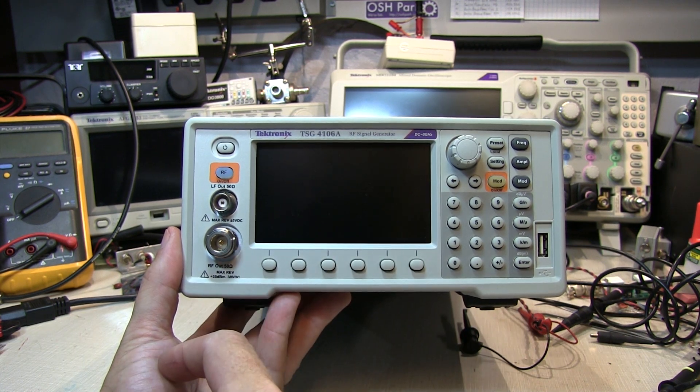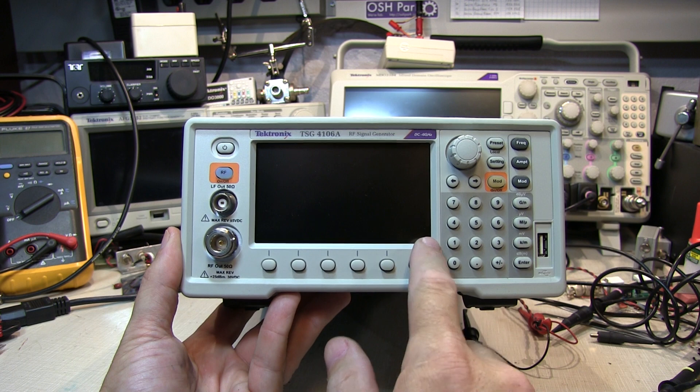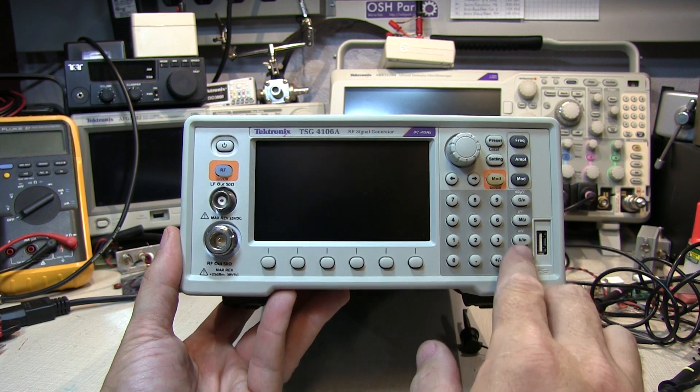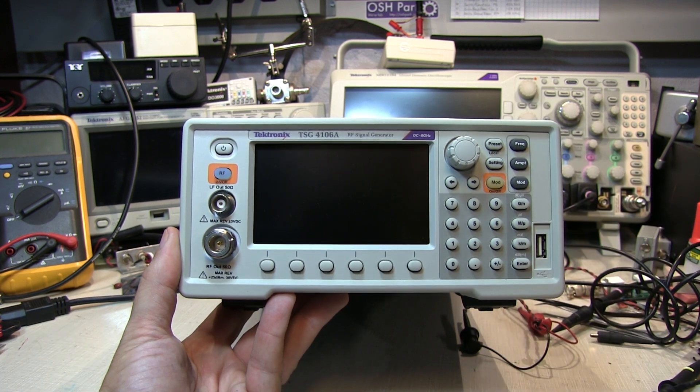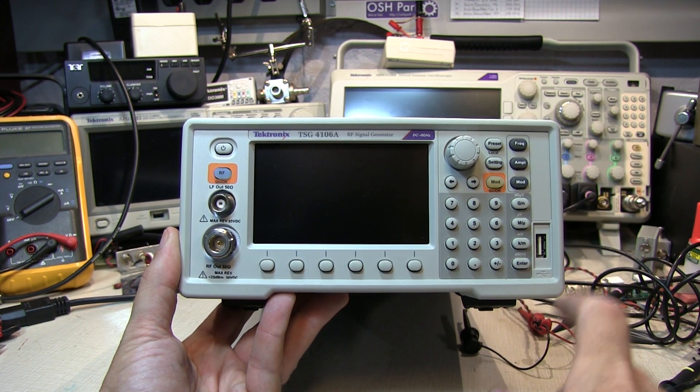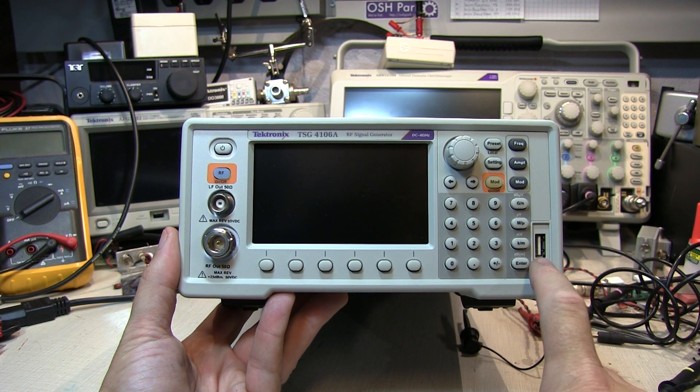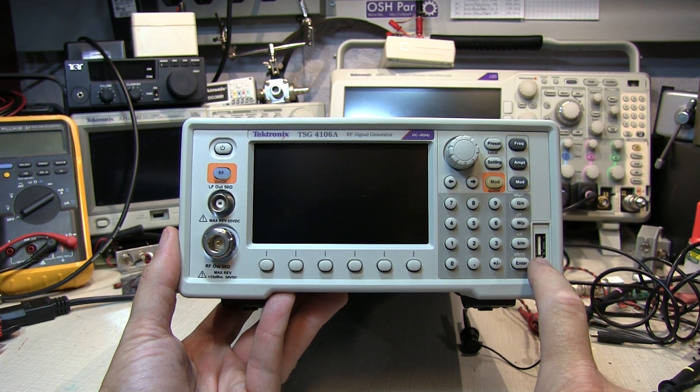And then the RF output takes you from about 950 kilohertz up to the maximum frequency range of the instrument which in this case is 6 gigahertz. So these are soft keys that will work with menus on the display, a typical numeric keypad, and quick entry keys for setting frequency amplitude and getting to the modulation.